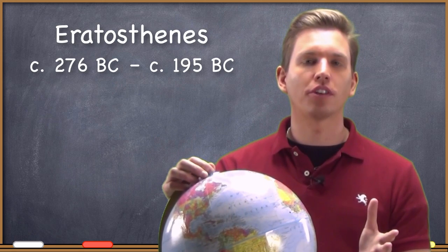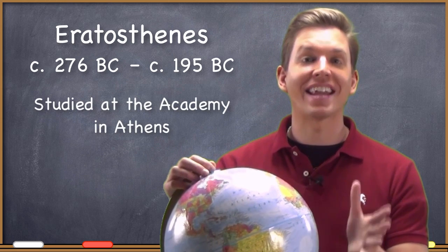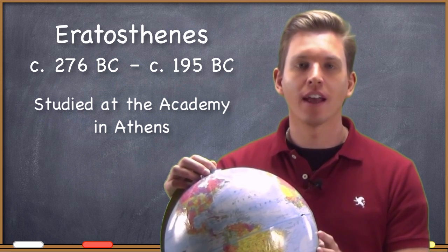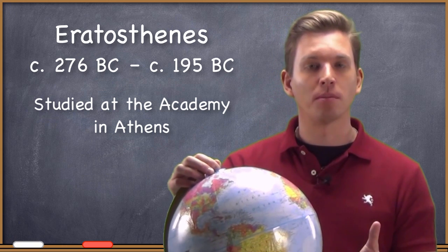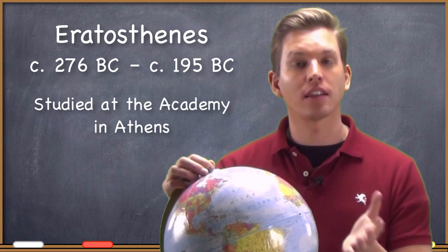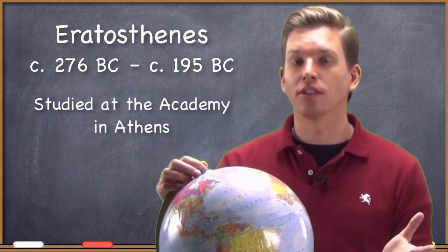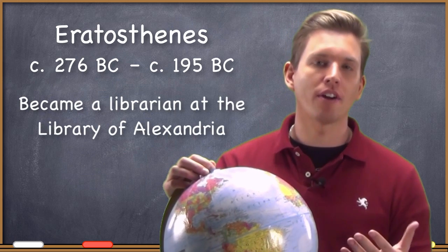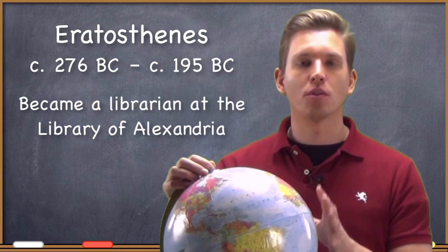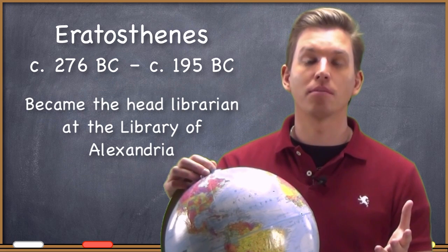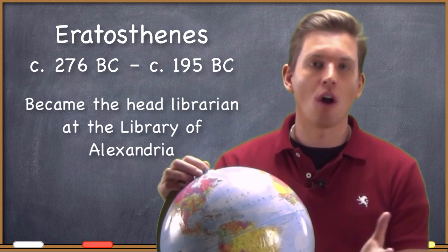Eratosthenes was born in about 276 BC and had the opportunity to study at the elite educational institution called the Academy at Athens. While there, he developed a reputation as a tremendous scholar — so much so that the pharaoh of ancient Egypt asked him to come and become a librarian at the Library of Alexandria, which was one of the most preeminent educational institutions in the ancient world. In fairly short order, he became the head librarian, essentially the preeminent academic position in all of the ancient world.